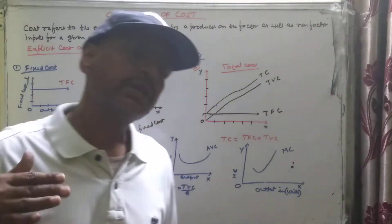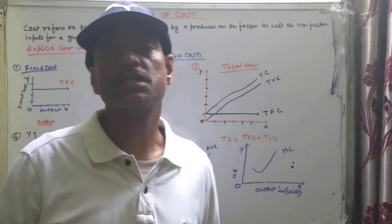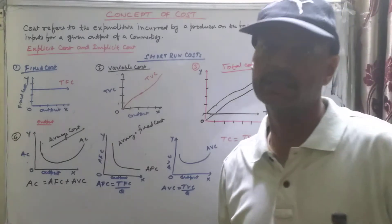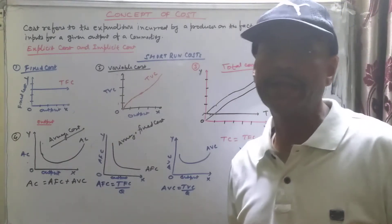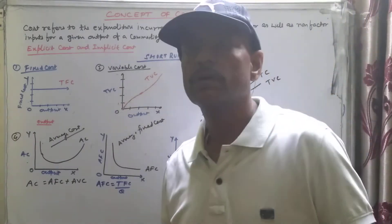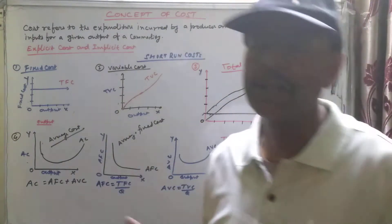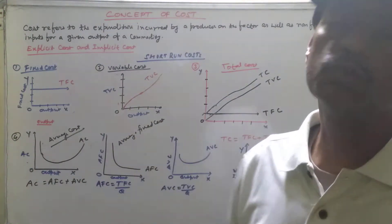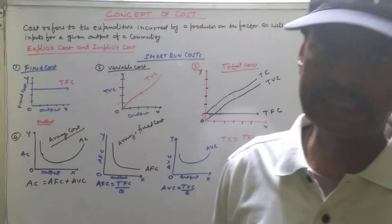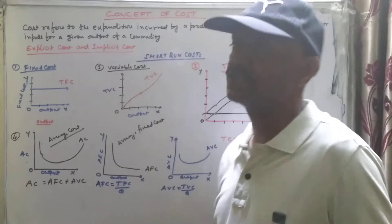Explicit cost is the cost paid by the firm to outsiders. Whatever expenses are given to or incurred for outsiders — such as buying raw materials, paying labor, or any other payments made to external parties — those are called explicit cost.